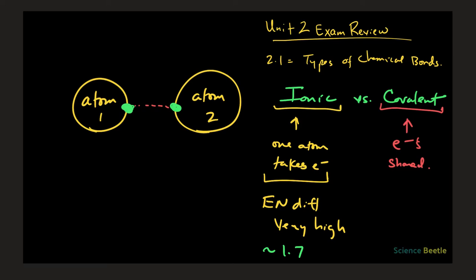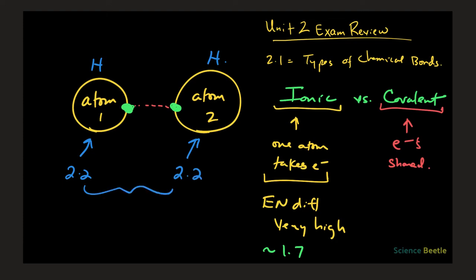We want to take the electronegativity of the first atom and compare it to the second. For example, if both atoms are hydrogen, the electronegativity for a hydrogen atom is 2.2. When we subtract: 2.2 minus 2.2, the difference is zero. This tells us that neither atom has the edge over the other, so the electrons are going to be shared — because the electronegativity difference is not high.